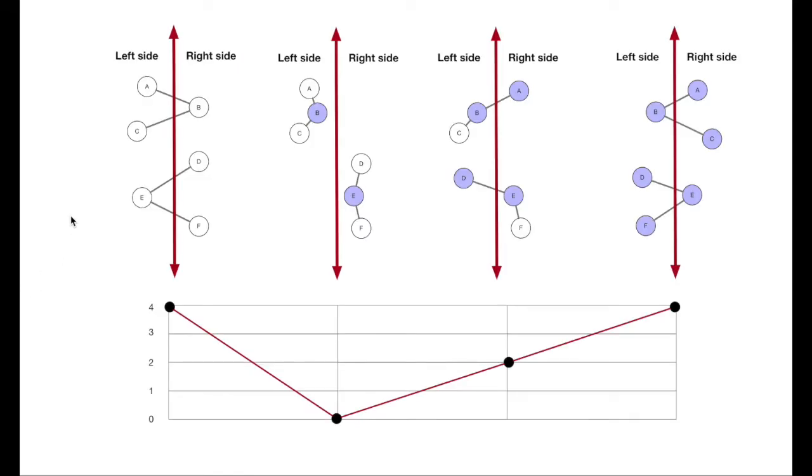And so what's happened in this Kernighan-Lin heuristic is we started out here with a cut of four, that's a cut of four. We swap B and E, that takes us to here, cut of zero, A, B, C, D, and F. Then we're going to keep on going, swapping A and D. So these guys go over, up to a cut of two, and then back over here, and we wind up with basically the mirror image of where we started out, that's where we wind up, mirror image, cut of four, starting, ending.